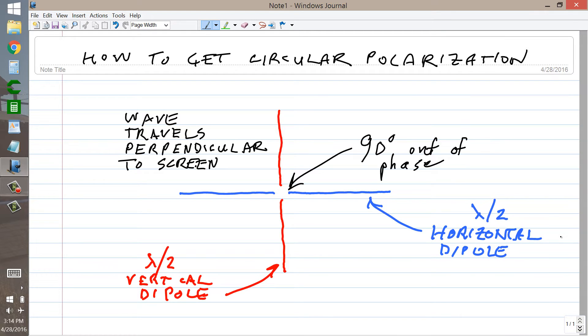If you feed it in phase quadrature with the red antenna lagging behind the blue antenna, the wave will go in one direction. And if you reverse the phase so that they are in phase quadrature in the other sense, the wave will go in the opposite direction.